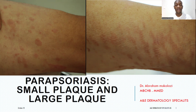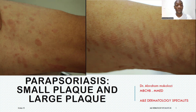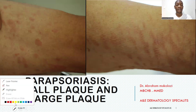Starting with this group, the parasoriasis — which includes both the small plaque and the large plaque parasoriasis — we shall look at other conditions that can mimic or have a psoriasiform pattern that can be a little bit more challenging when it comes to diagnosis.